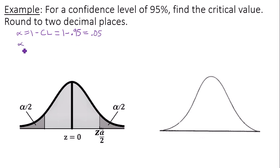Next, we need to find alpha over 2. Take the previous result we obtained, 0.05, and divide by 2. You get 0.025.